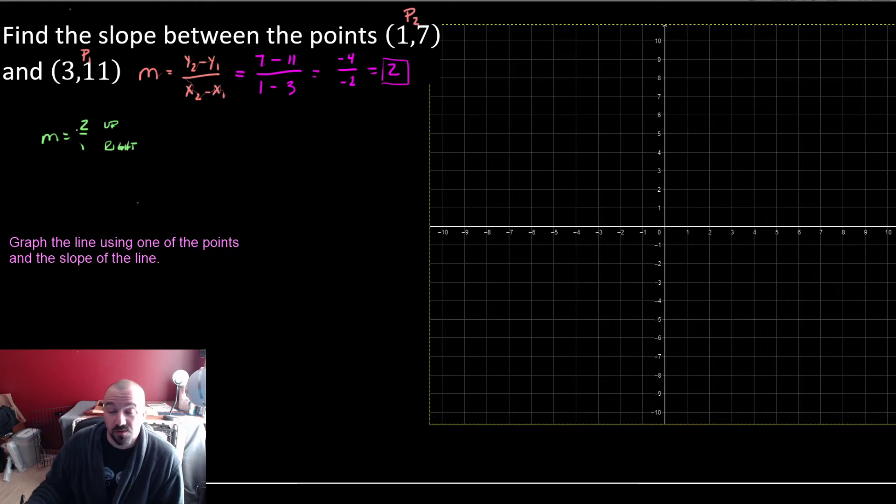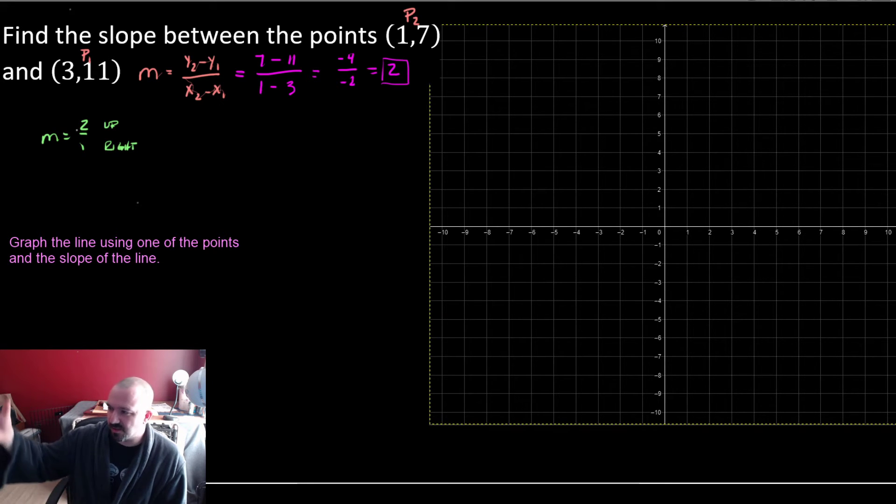Now, graph the line using one of the points, doesn't matter which one, and the slope of the line. So, just simply because it's a little closer to the center, I'm going to use (1,7) as my starting point. I also don't really have an 11 on my graph, so that's the other reason.